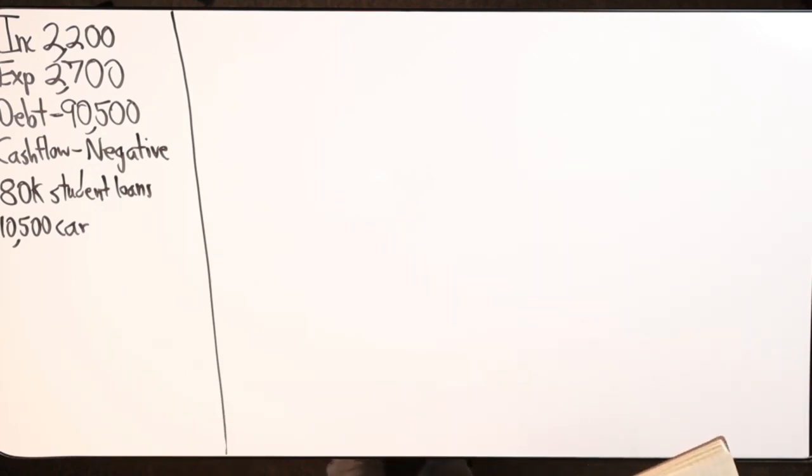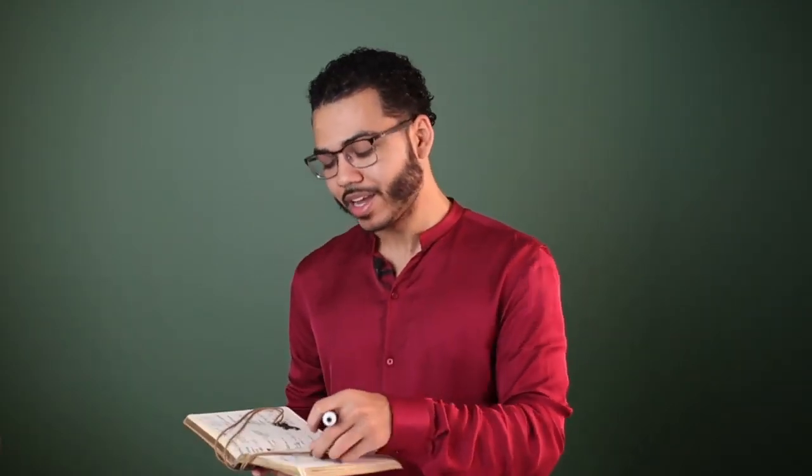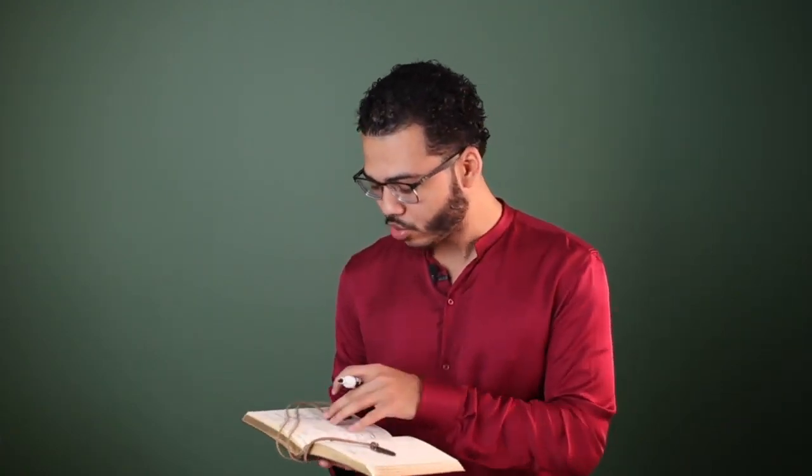If you are operating improperly when it comes to your finances, guess what? Your marriage might be improper. Your children might not treat you right. Your job may not treat you right. Your attitude, how you wake up in the morning, how you exercise, how you eat, everything gets messed up because how you do one thing is how you do everything.